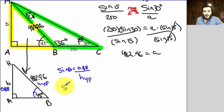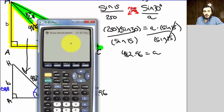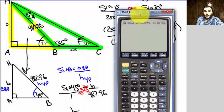So I could write sine of 45 degrees equals the opposite, which is B, over the hypotenuse, which is 482.96. I could put this over one, and now I can cross multiply and solve for B. So cross multiplying, I get B equals the sine of 45 times 482.96.